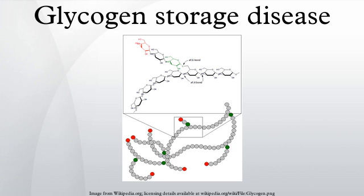Glycogen storage disease is the result of defects in the processing of glycogen synthesis or breakdown within muscles, liver, and other cell types. GSD has two classes of cause: genetic and acquired.